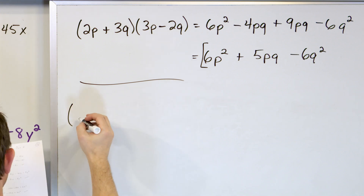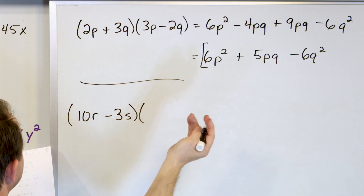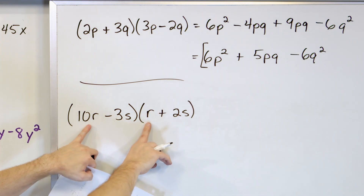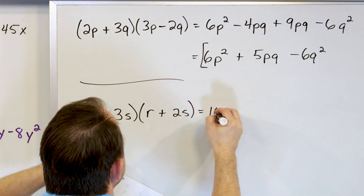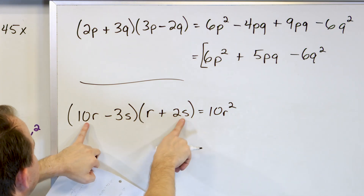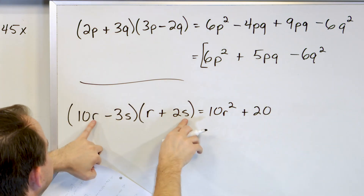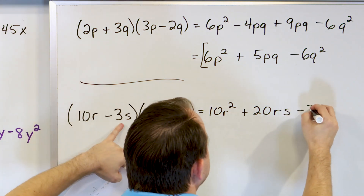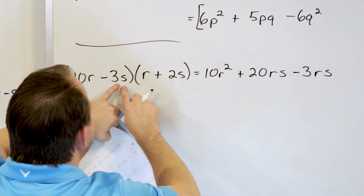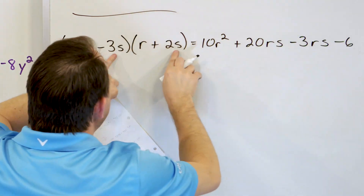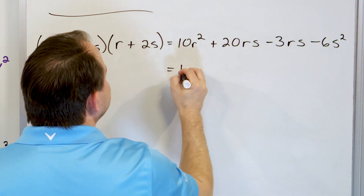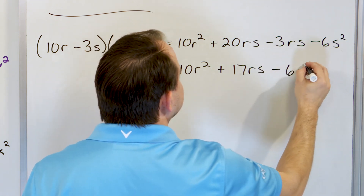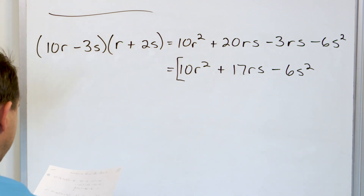What if we have (10r - 3s)(r + 2s)? Feel free to pause and work these yourself. First terms: 10r squared. Outer terms: 2 times 10 is 20rs. Inner terms: negative 3 times 1 is negative 3rs. Last terms: negative 3 times 2 is negative 6, and s times s is s squared. Combining: 20 minus 3 gives 17rs. Final answer: 10r squared plus 17rs minus 6s squared.